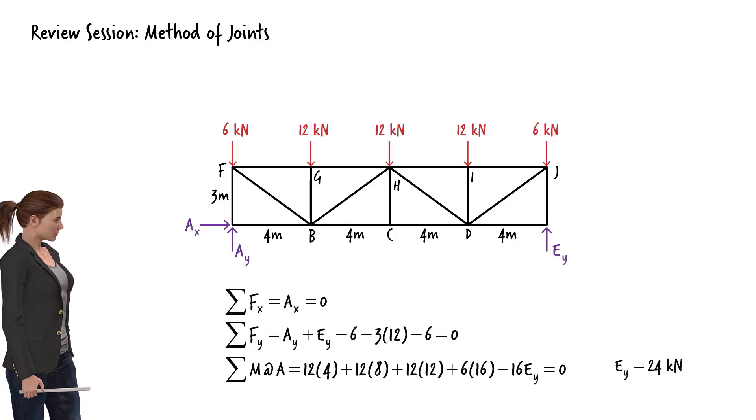Solving the last equation for EY, we get EY equals 24 kN. And from the first equation we can see that AX is zero.